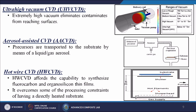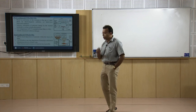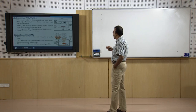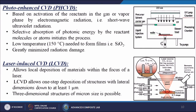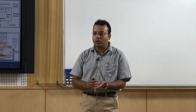Photo-enhanced CVD (Ph-CVD) is based on activation of reactants in the gas or vapor phase by electromagnetic radiation — generally short-wave ultraviolet radiation. Selective absorption of photonic energy by reactant molecules or atoms initiates the process. Low temperature, generally 150 degrees centigrade, is needed to form films like silicon dioxide, greatly minimizing radiation damage. A UV lamp chamber generates the UV source, carrier gases react with the ultraviolet rays, forming materials that deposit onto the substrate.